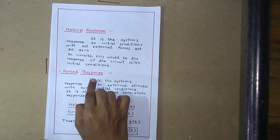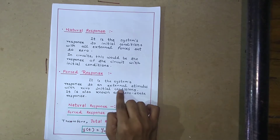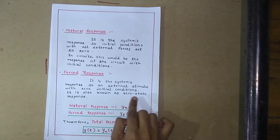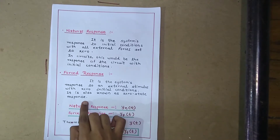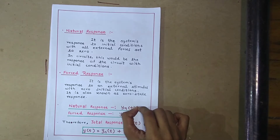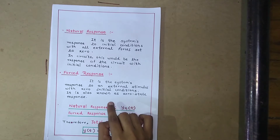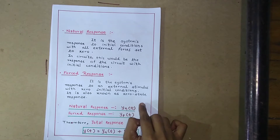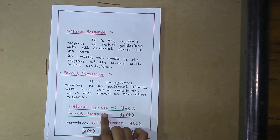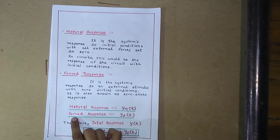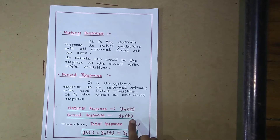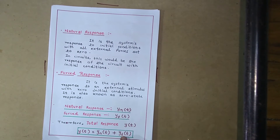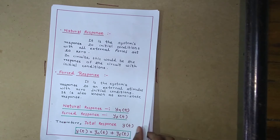Moving towards forced response — it is the system's response to an external stimulus with zero initial conditions. It is also known as the zero state response. In forced response, we add a certain input to the signal, which is defined only for t greater than zero; that is, at t less than zero it is equal to zero. Natural response is denoted as y_n(t) and forced response as y_f(t). The total response y(t) is defined as y_n(t) plus y_f(t), which includes both natural and forced response.